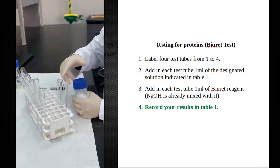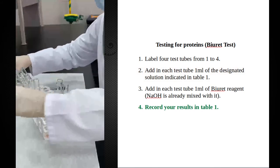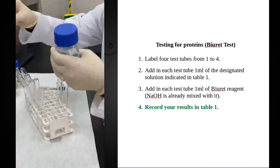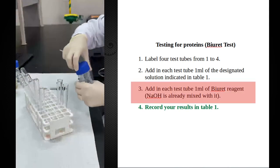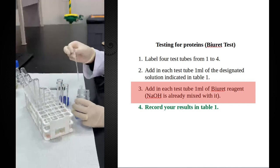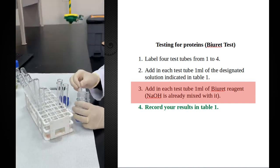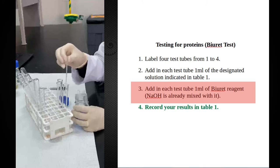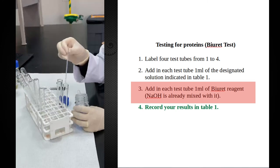In this test today, our lab technician has prepared for us Biuret reagent with NaOH in the same solution, so we don't need to add NaOH. All what we have to do is to add 1 ml of the Biuret reagent to each of these test tubes, as discussed in the lecture.